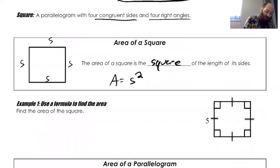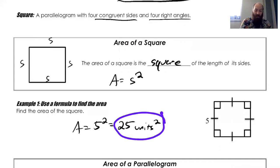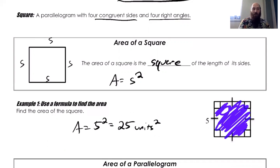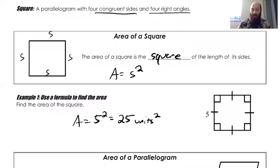For example one here, find the area of this square. I know that all four sides are five, so I'm just going to do this as five times five, which is 25. I don't have any dimensions, so I'm going to write units squared. It's one big thing about this unit. If we're talking about area a lot, then you are going to be doing stuff like this, where it's the dimension squared.